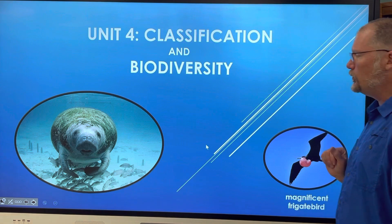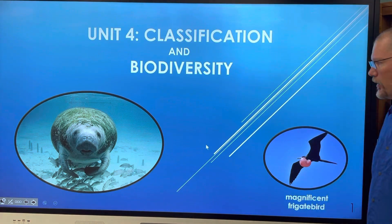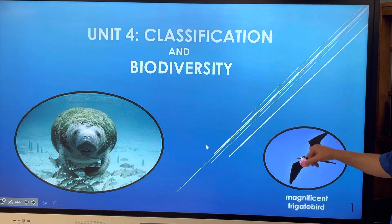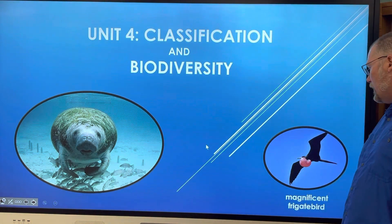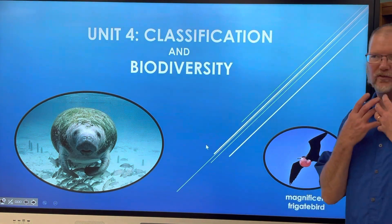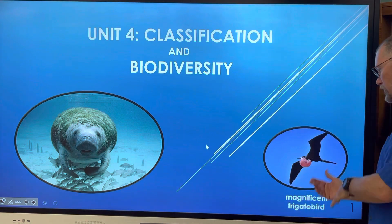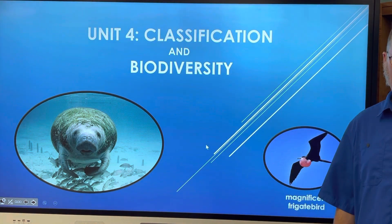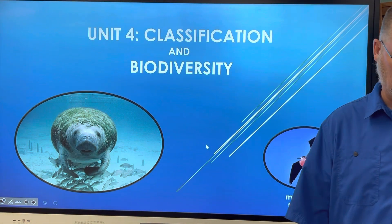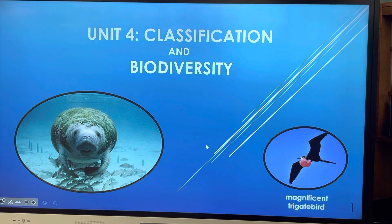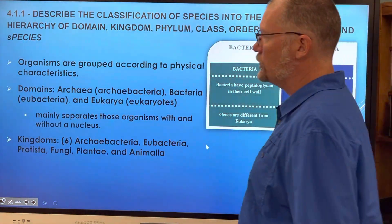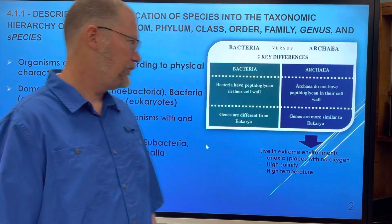So these are two species we have in Florida. We have the manatee, which is a mammal, and we have a bird called the magnificent frigate bird. The males have these bright red pouches that they expand during mating season. Pretty neat birds — we have them right here in Florida.